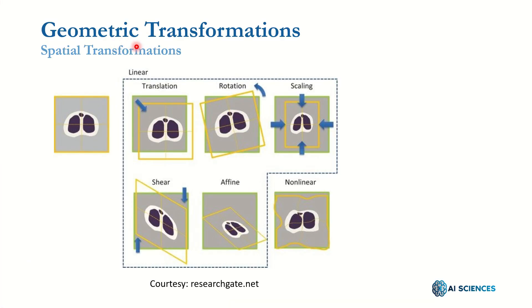We are going to learn geometric transformations, in particular the transformations that are spatial, which means they are related to positions of different pixels. These geometric transformations are not only a fun thing to do with images — you may want to rotate an image, zoom in or zoom out, or create special effects on an image.